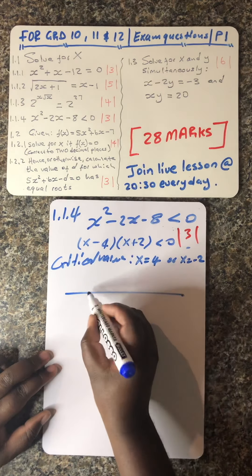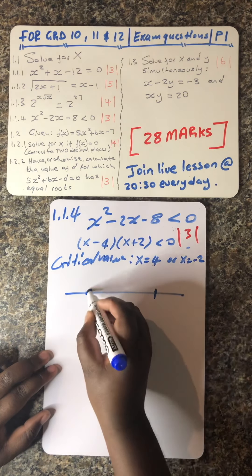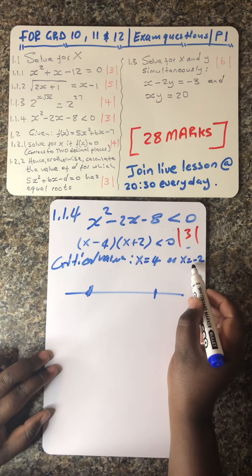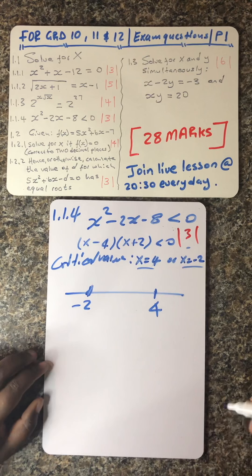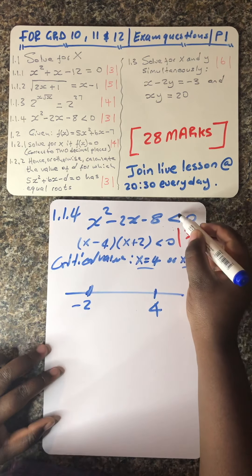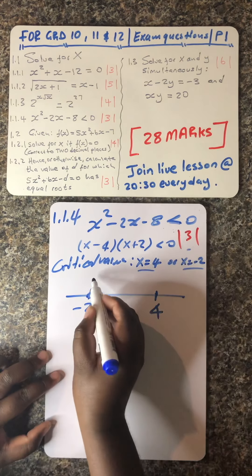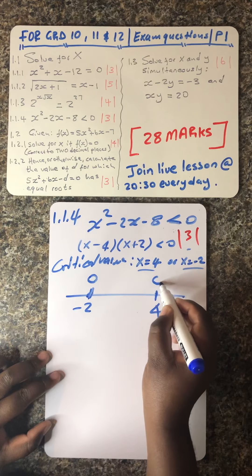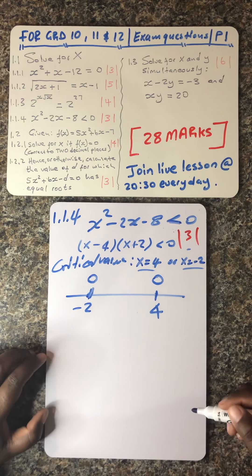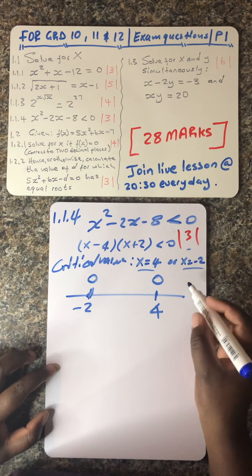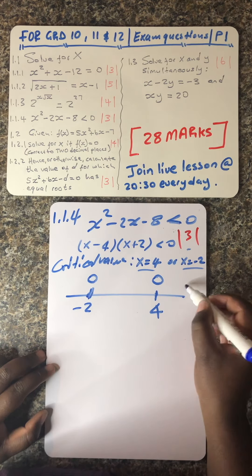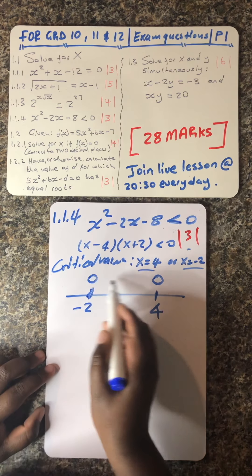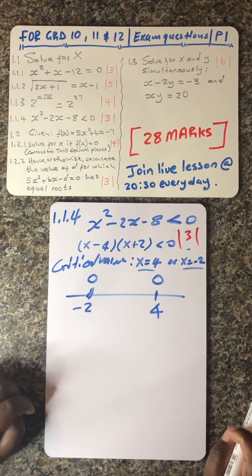So you can just draw a number line and indicate that you've got negative 2 and you've got 4 — these are your critical values. Now, because of that sign which is less than, that's where you have open circles. After having those circles, you then need to indicate by means of arrows — an arrow in that direction, an arrow in that direction, or joining those two circles.